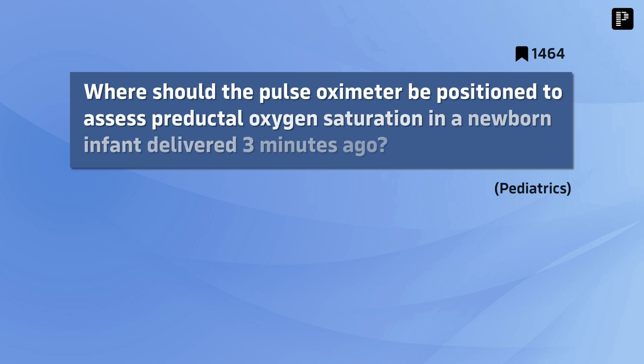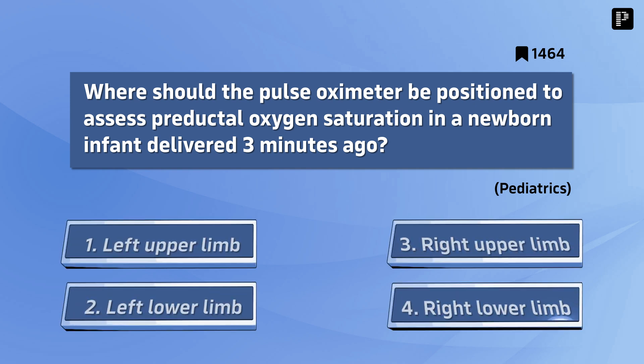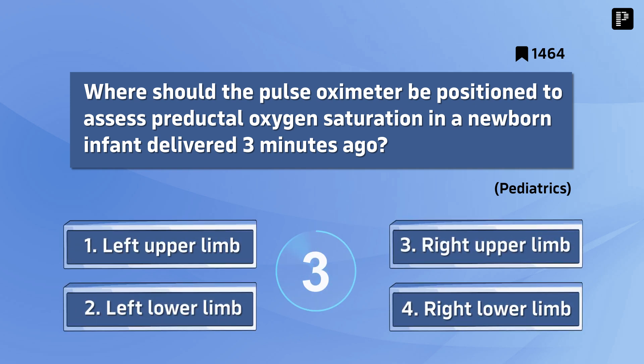Question 10: Where should the pulse oximeter be positioned to assess preductal oxygen saturation in a newborn infant delivered 3 minutes ago? The correct answer is the right upper limb.